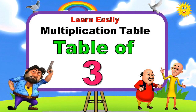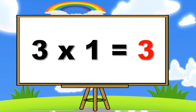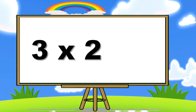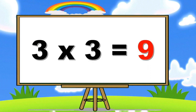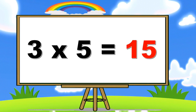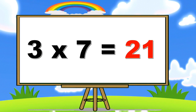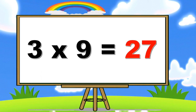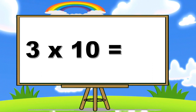Table of three. Three ones are three. Three twos are six. Three threes are nine. Three fours are twelve. Three fives are fifteen. Three sixes are eighteen. Three sevens are twenty-one. Three eights are twenty-four.